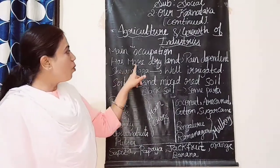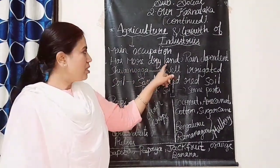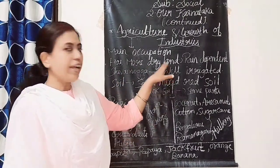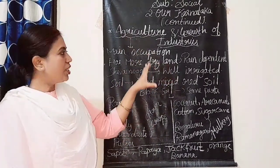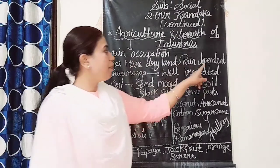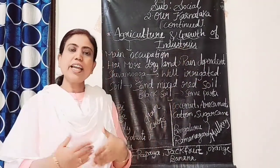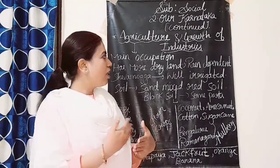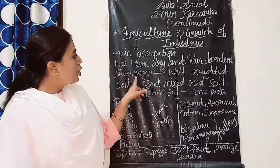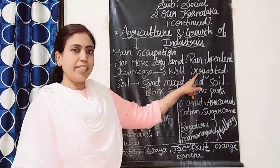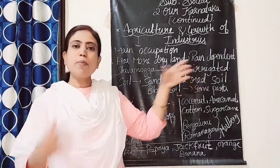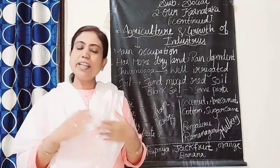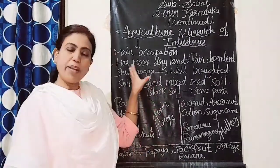This division has more dry land, meaning land without sufficient rain or water. That's why this division is mostly rain dependent — if rain comes, they can cultivate the land and grow crops. Shimoga district, however, has well-irrigated land, with water supplied through canals from dams.